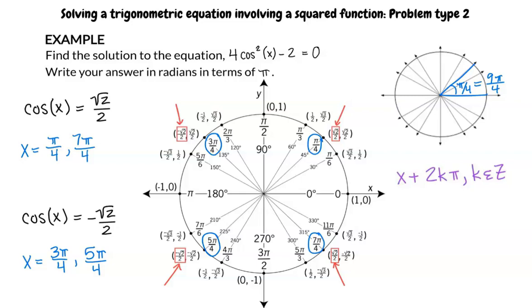For example, pi over 2 plus 2 pi times 2, where k is equal to 2, and pi over 2 plus 2 pi times 1000, where k is equal to 1000, are both solutions to x. The only difference is the number of revolutions around the circumference of the unit circle.